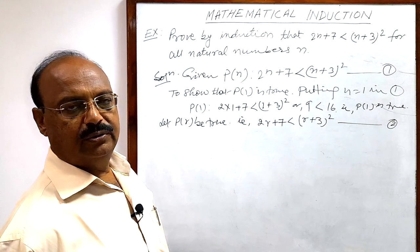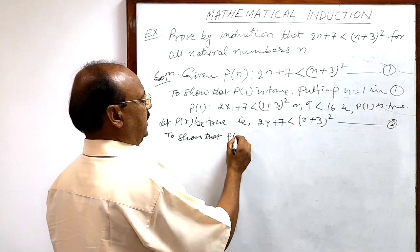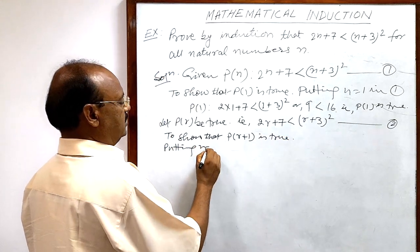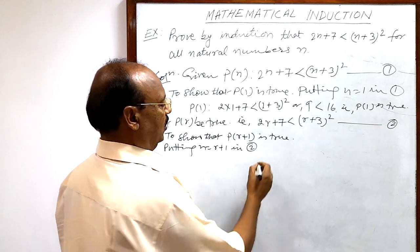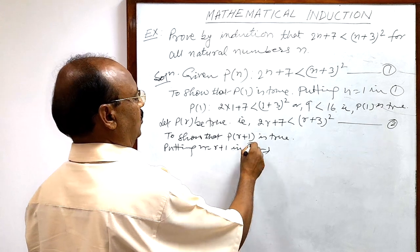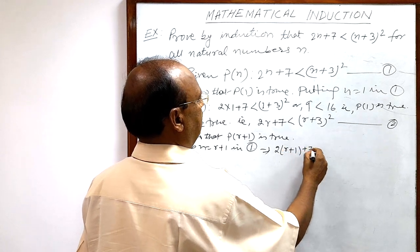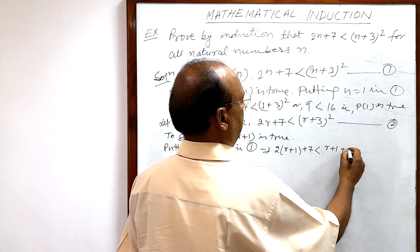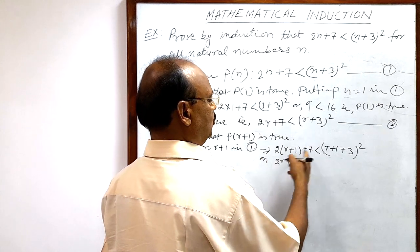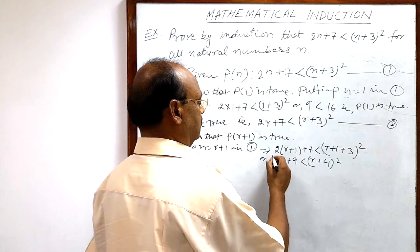For the third and last step, we will show that P(r+1) is true. Putting n = r+1 in relation number 1, we get 2(r+1) + 7 is smaller than (r+1+3)², which simplifies to 2r + 2 + 7 = 2r + 9 is smaller than (r+4)².